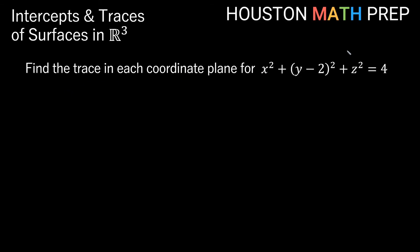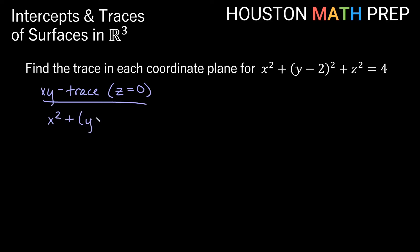Our last example: we're going back to our sphere equation and want to find the trace in each of the coordinate planes. Beginning with the xy-trace — z is not named in that trace, so that's when z is equal to 0. Setting z equal to 0 gives us x squared plus (y minus 2) quantity squared is equal to 4. This is actually a circle in the xy-plane with center (0, 2) and, since the right-hand side is 4, a radius of 2.